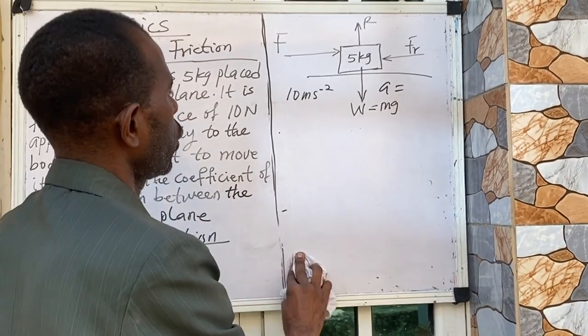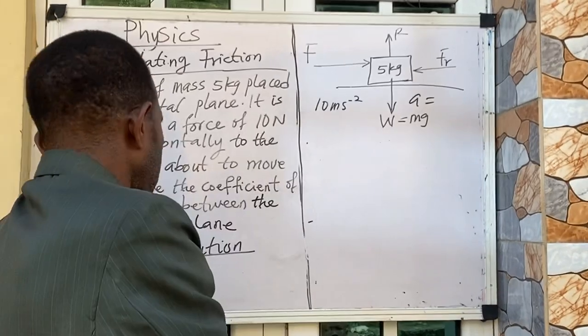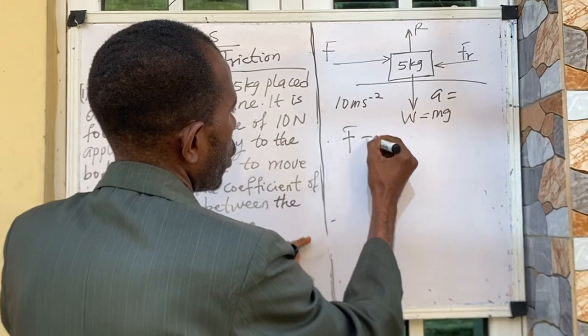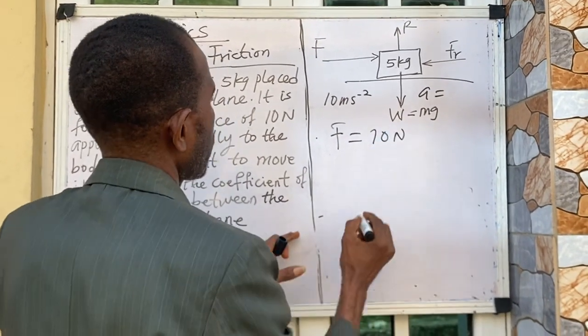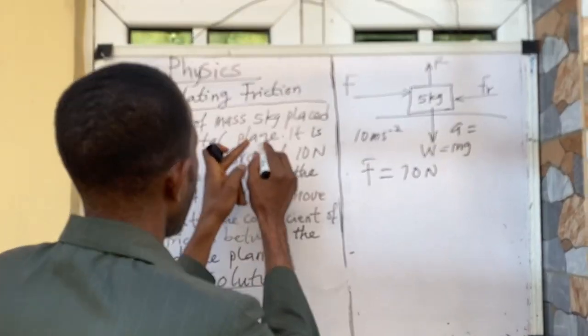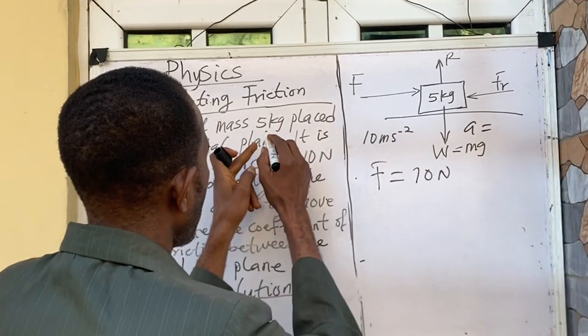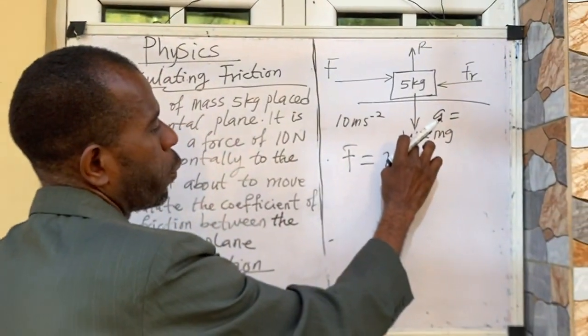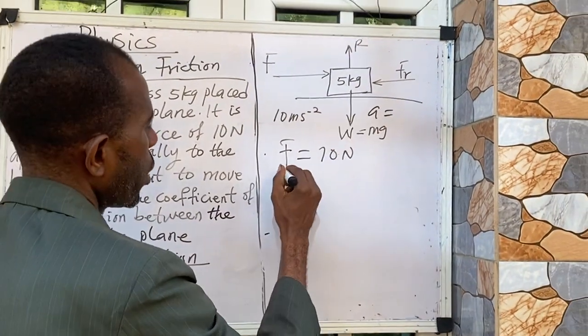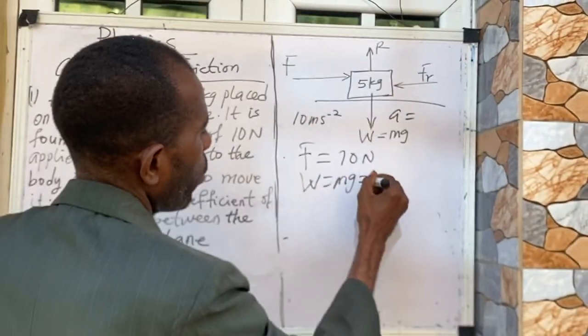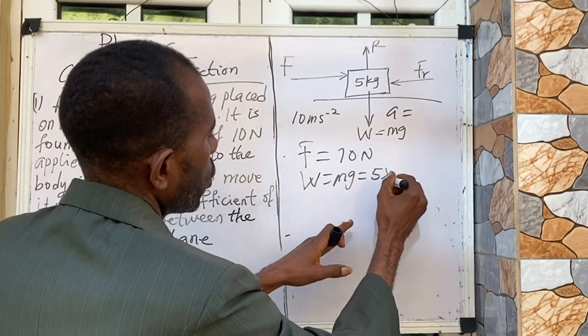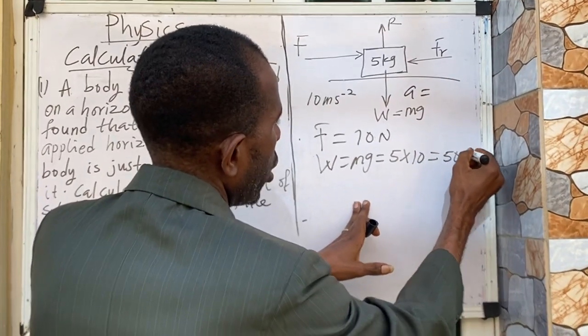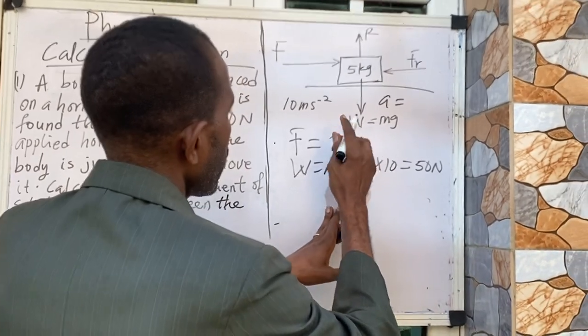So let me clean so that we find the coefficient of static friction. When you look at the question here, the force F is equal to 10N. Mass m is equal to 5 kg. And we are going to make use of weight, which means W = mg will be 5 times 10 giving us equal to 50 Newton.